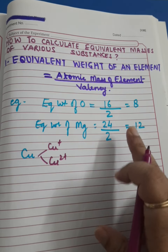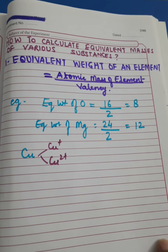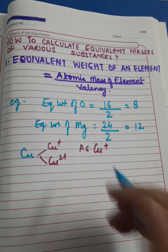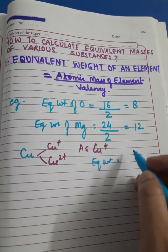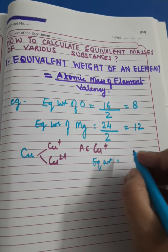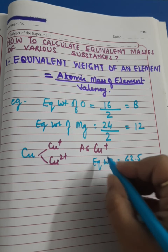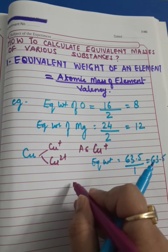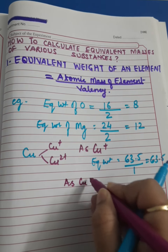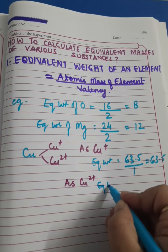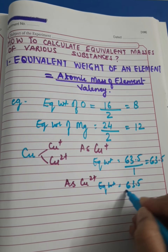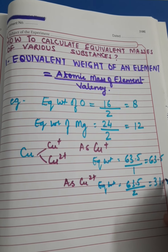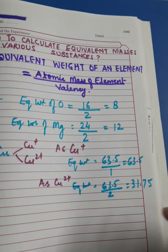Since copper has variable valency, it will have variable equivalent weight. As Cu⁺ (cuprous ion), its equivalent weight equals atomic mass divided by valency, which is 63.5 divided by 1, so that equals 63.5. Now if we want to calculate its equivalent mass as Cu²⁺, that will be 63.5 divided by 2, which equals 31.75, or approximately 31.8.